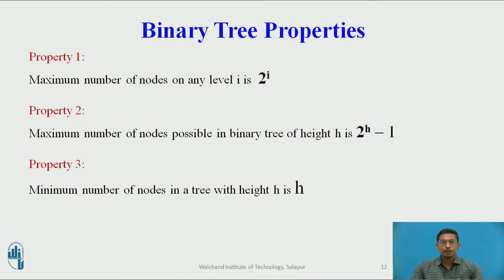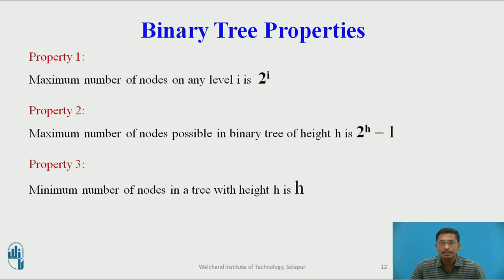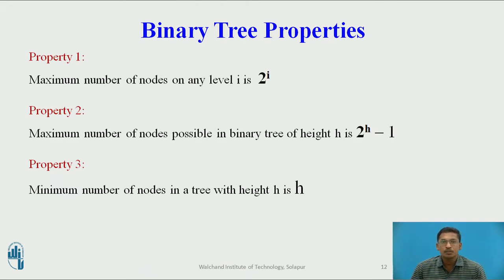These are different properties of binary tree. Property 1: the maximum number of nodes on any level i is 2 raised to i. So at level 0, the number of nodes is 1 (the root node); at level 1 it is 2; at level 2 it is 2 raised to 2, which is 4, and so on.